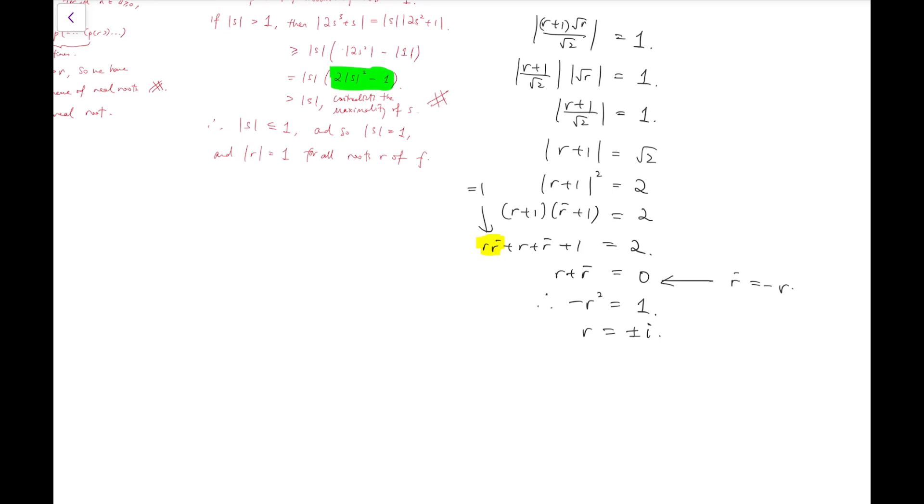So I found out that ±i are the only roots of f because r is arbitrary. And I let r be a root of f and somehow I managed to solve that r could only be ±i. So these are the only roots of f.